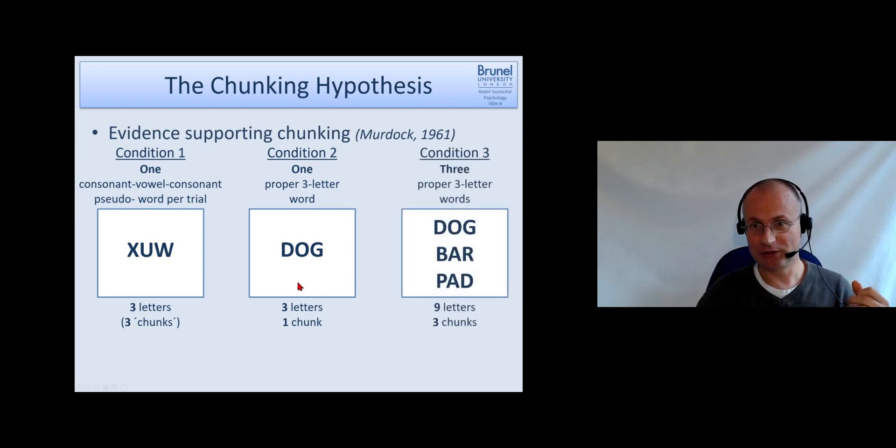Now the third condition was that participants saw three proper three-letter words like dog, bar, pad. Now the information is much higher, nine letters, but the number of chunks is like in the first one.